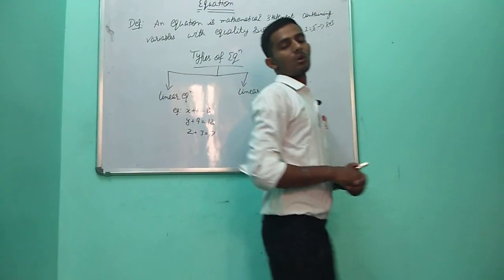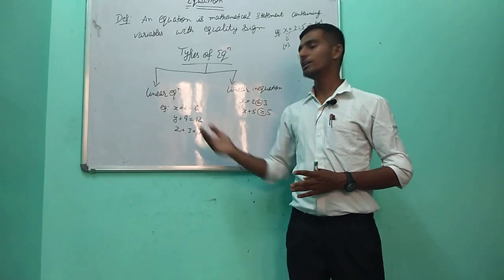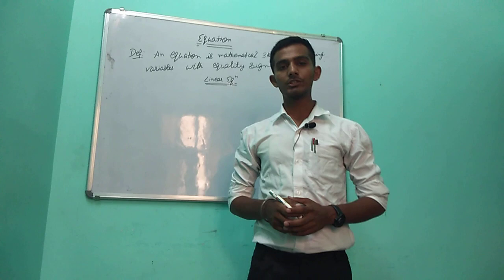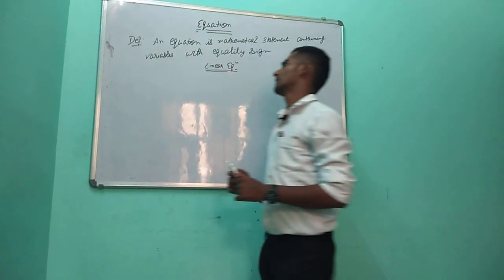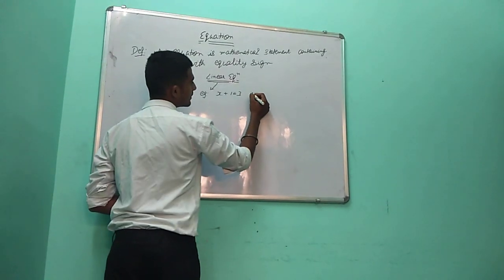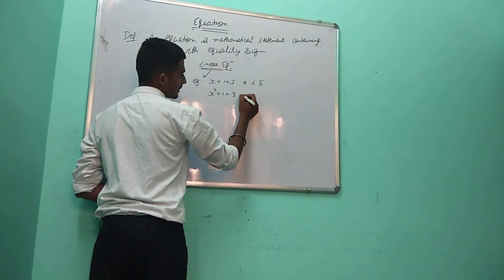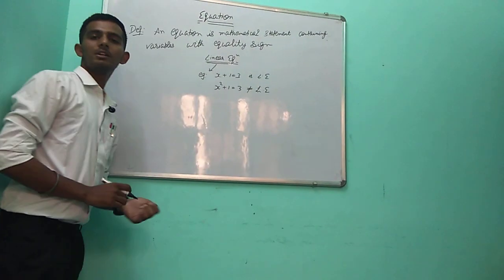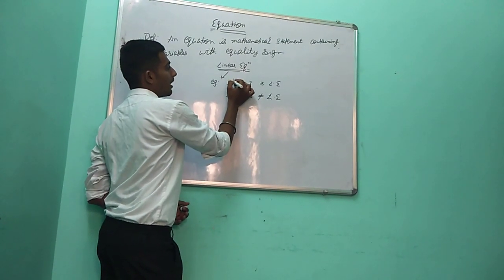In today's lecture we will discuss about linear equations — what is a linear equation and how many methods are there to solve linear equations. A linear equation is an equation consisting of constants and variables of highest power 1. For example, x plus 1 is equal to 3 is a linear equation. If the highest power is 2, that is not a linear equation. A linear equation's highest power is 1.